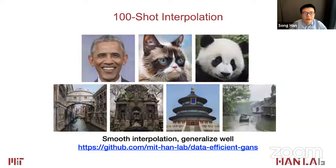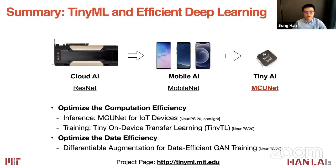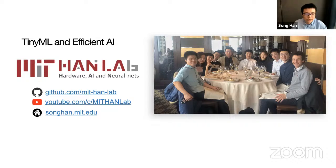We presented TinyML and efficient deep learning techniques. First, we optimized computation efficiency from cloud to mobile to tiny devices: ResNet to MobileNet to MCUNet, achieving ImageNet-level accuracy on tiny microcontrollers for IoT. For training, TinyTL fine-tunes bias only and saves training memory, not just parameters. Finally, differentiable GAN augmentation trains photorealistic GANs with only 100 images. All code is available on our GitHub and website. Thank you.